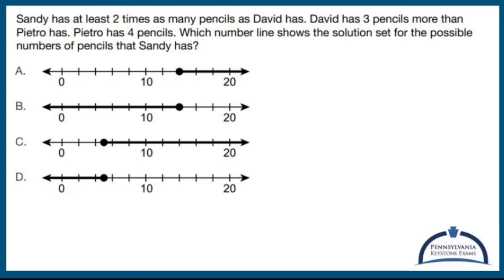Sandy has at least two times as many pencils as David has. David has three pencils more than Pietro. Pietro has four pencils. Which number line shows the solution set of possible numbers that Sandy has? Okay. So lots to do here.